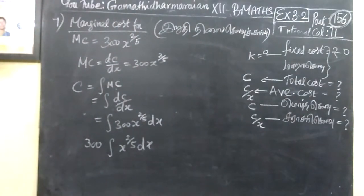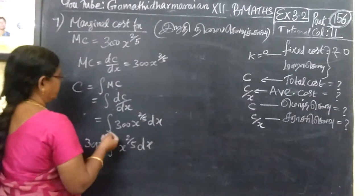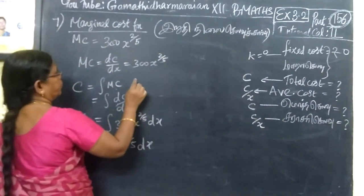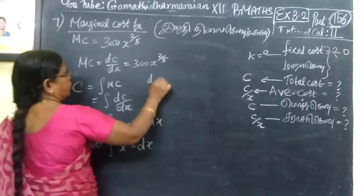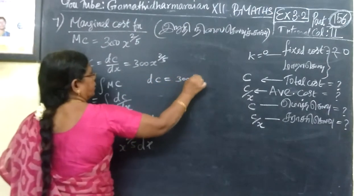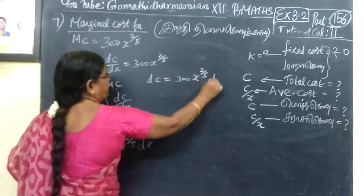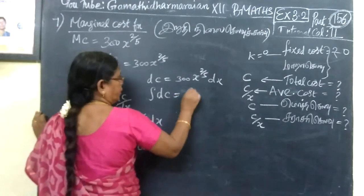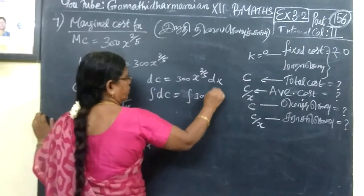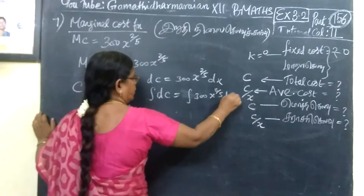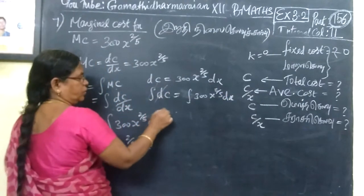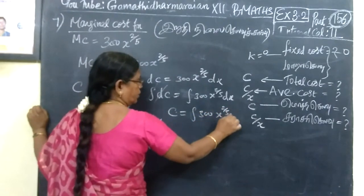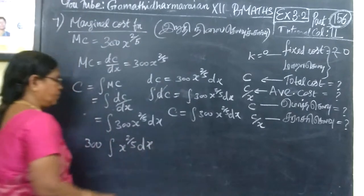So, integral of 300x power 2 by 5 DX. Integral of DC by DX. So, integral of 300x power 2 by 5 DX.